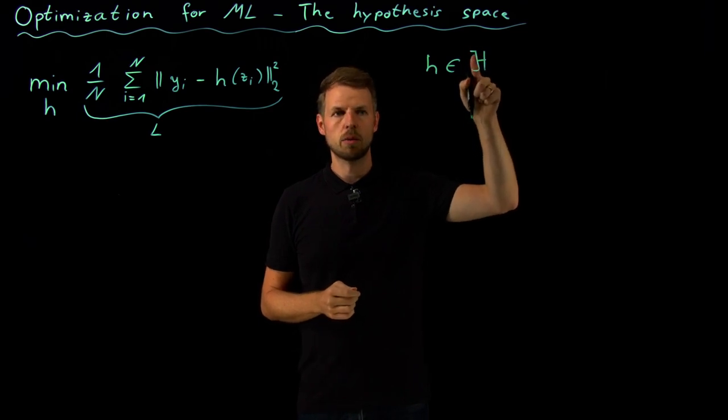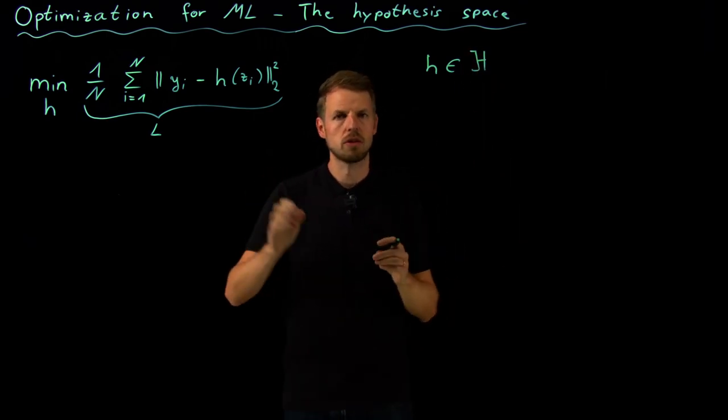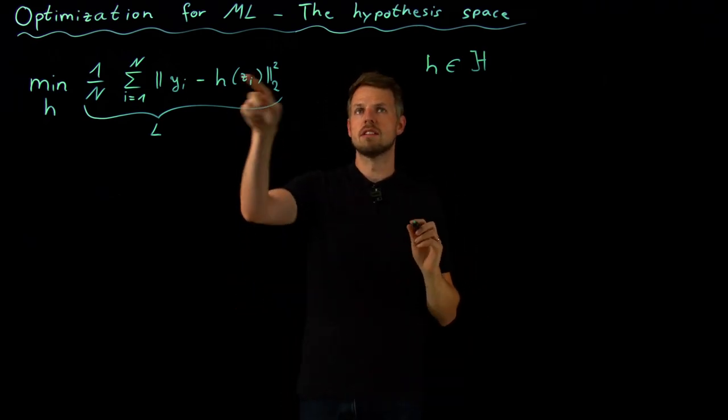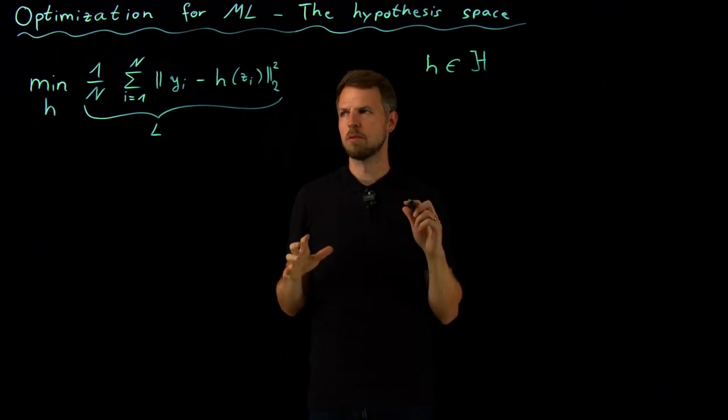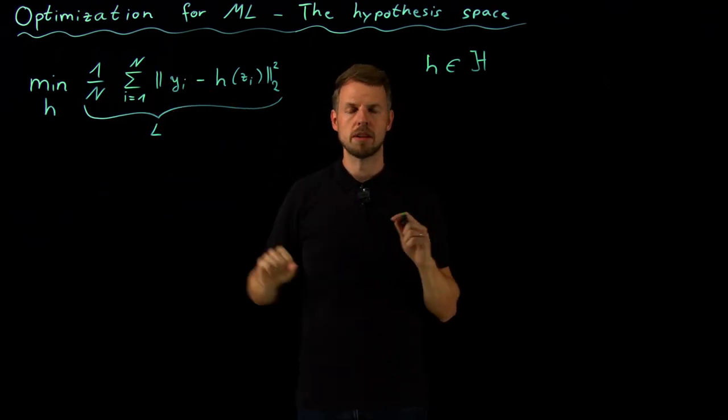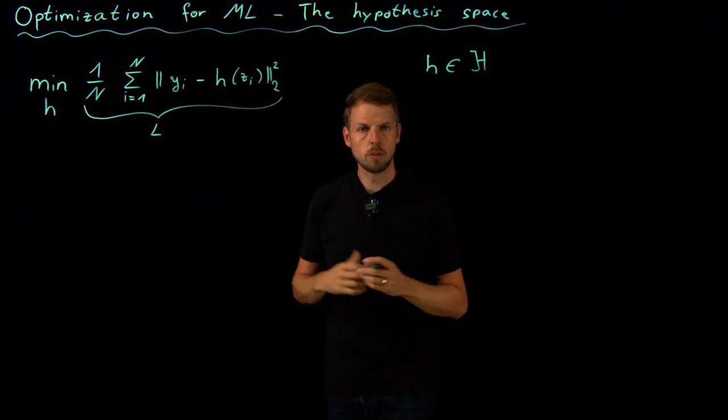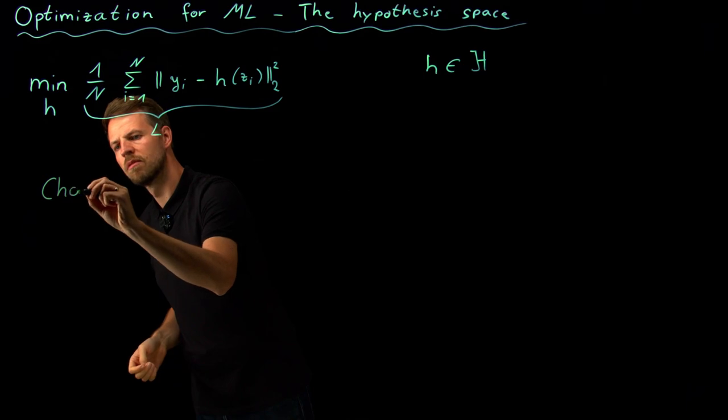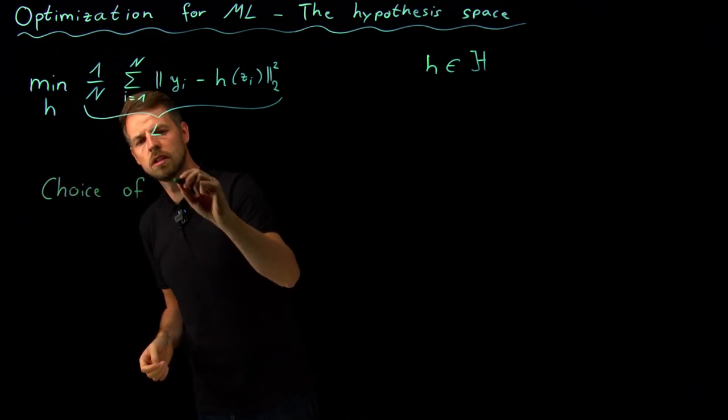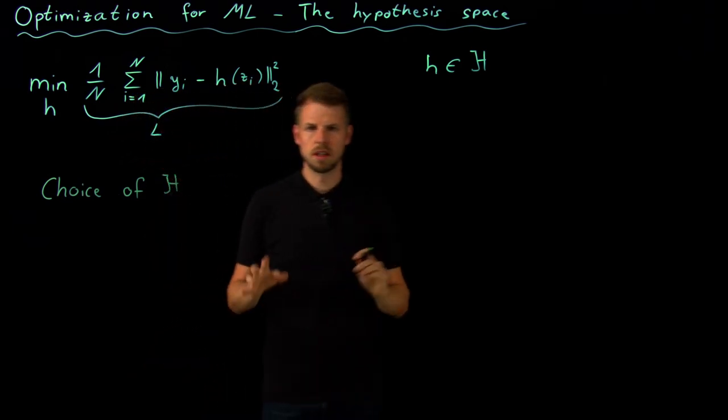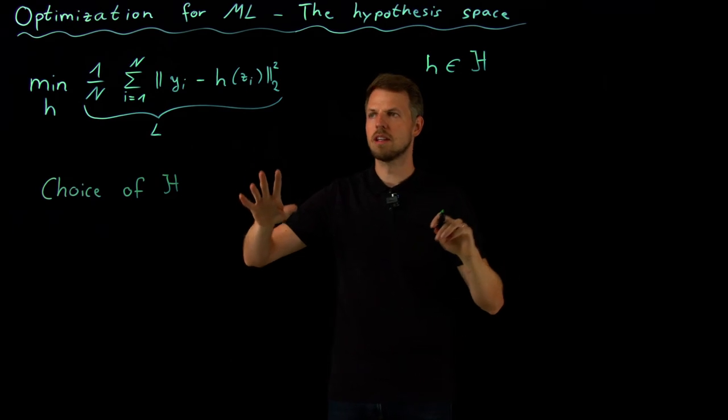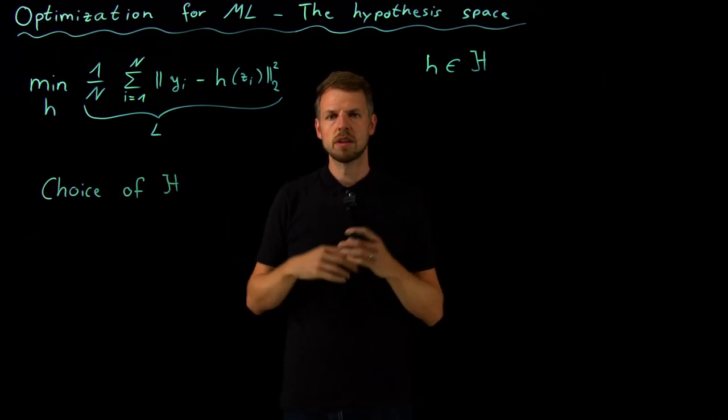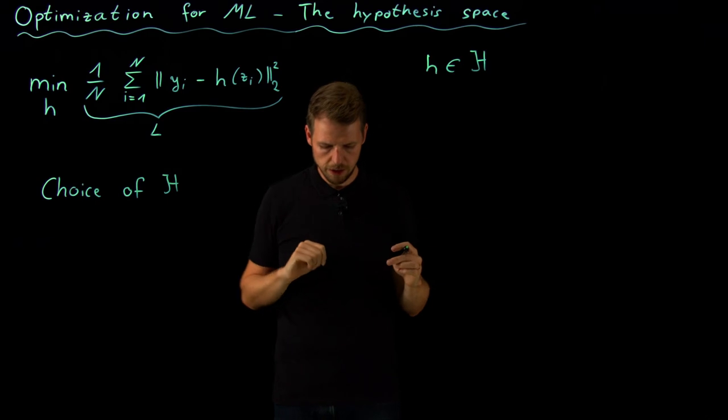So we are not working in thin air here and saying any function can be chosen, but we're saying h is an element of this big H. Let's say big H is the space of linear models, or maybe all neural networks of a given fixed architecture. We will get to neural networks in more detail later, but these are the things that you can do. So what we need to do, and this is what this video is about, is discuss the choice of the hypothesis space and then refine this optimization problem so that we can implement it into a computer algorithm.